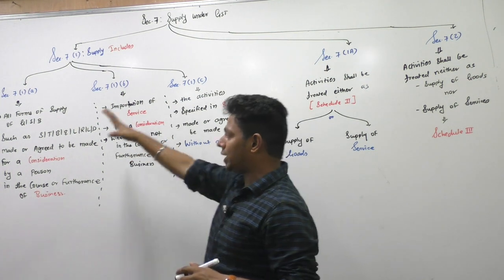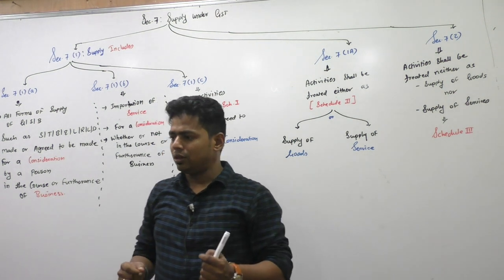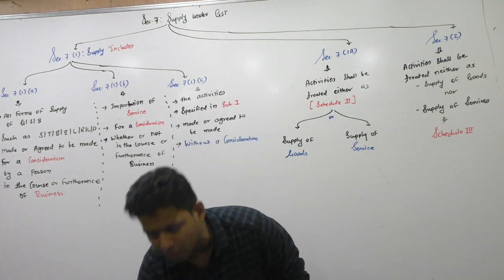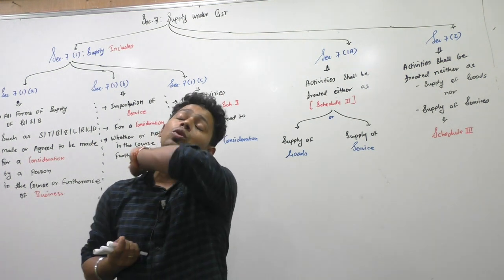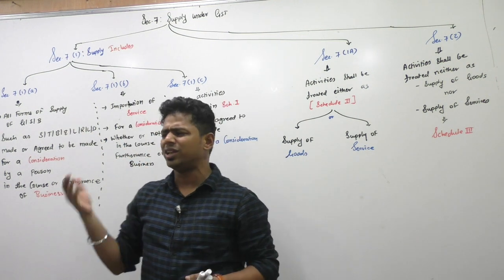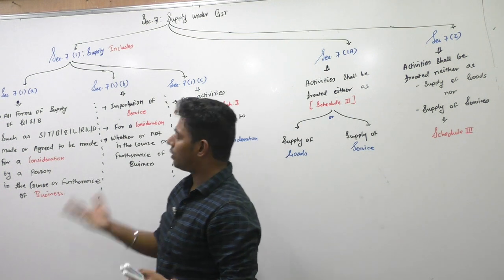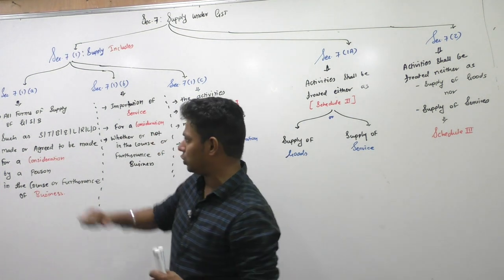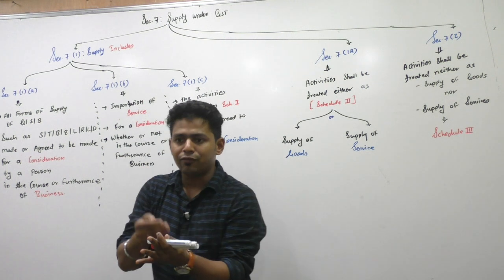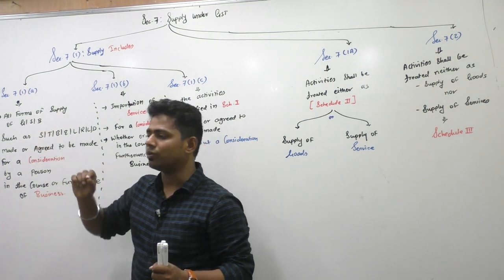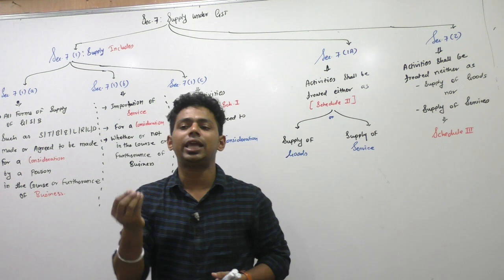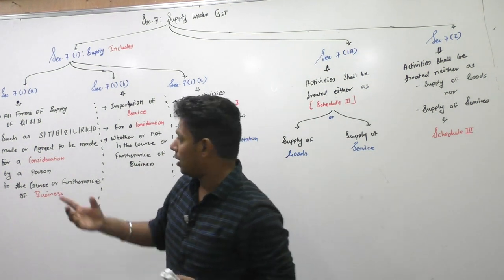Section 7(1) Clause A talks about supply including all forms of supply. Look at the word — 'all.' All forms of supply of goods or service or both. Such as: the basic form of supply that happens in industry is sale. The basic form by which goods can be supplied by one person to another is sale. For example, I can sell these markers to you — that is supply.